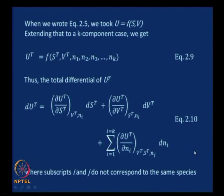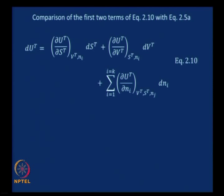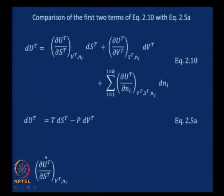Comparing the first two terms of equation 2.10 with equation 2.5A, it is straightforward to identify that (∂UT/∂ST) at constant VT and Ni equals T, and (∂UT/∂VT) at constant ST and all components held constant equals minus P. Note that this is for a multi-component system compared with a single component system, and we are drawing useful relationships.